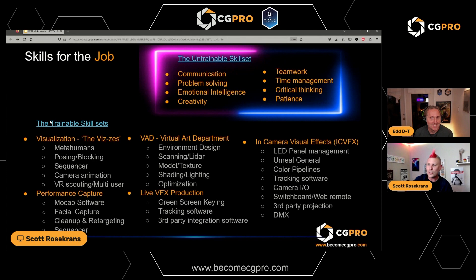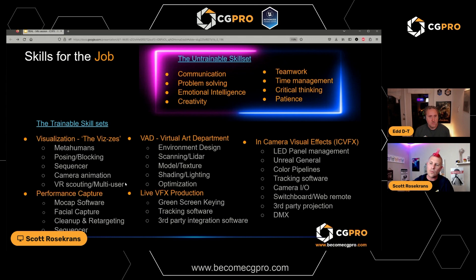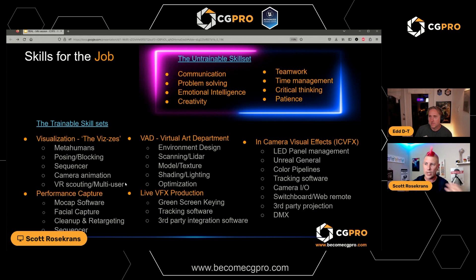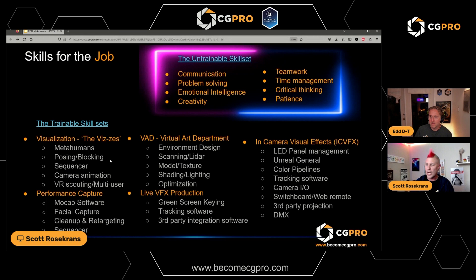On the trainable side — for visualization — we've got learning how to operate and use Metahumans in your pre-vis. iClone is another option if you're comfortable with that. But outside of Metahumans and iClone, just using the default mannequin from Unreal is no longer cutting it. It is so easy to customize things and create a killer Metahuman that looks like the actor you're supposed to be representing — it's achievable and doesn't take a lot of time.